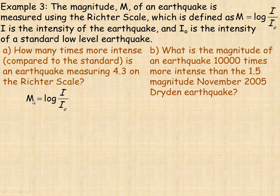And part A here asks how many times more intense than the standard is an earthquake measuring 4.3 on the Richter scale. So here's the formula. So 4.3 is the M. And so this is a lot like the first example. We're actually asked to find this ratio, I over I₀. So we're solving for that. So I over I₀ would equal 10 raised to the power of 4.3, putting that back in its equivalent exponential form.